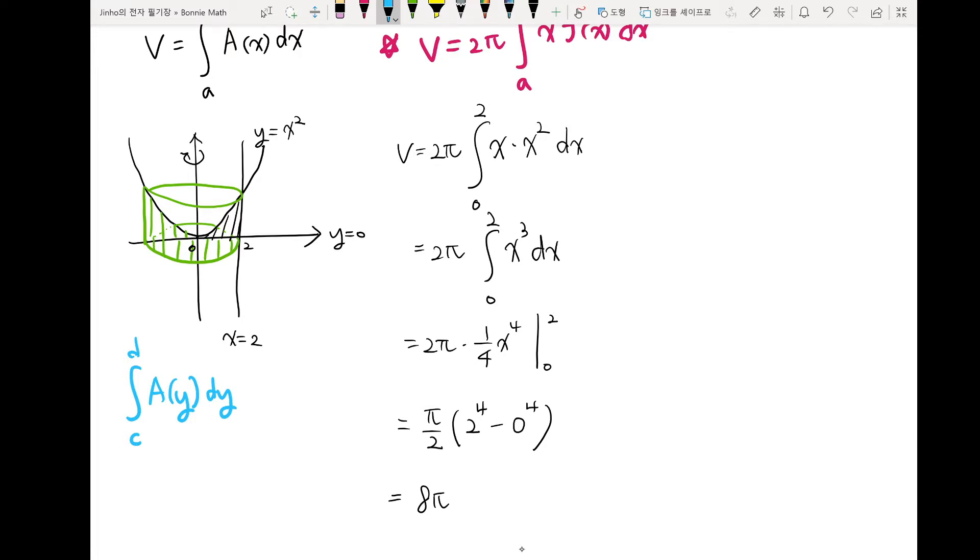So if you look at this bottom part, we are starting from 0 until 4, because if you plug 2 to our y equal to x square, you get 4 for y. And our area now is circle. So integral 0 to 4, area, I will just leave it as r for now, π r square and dy.